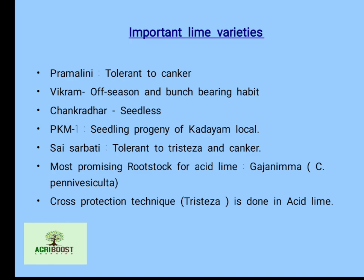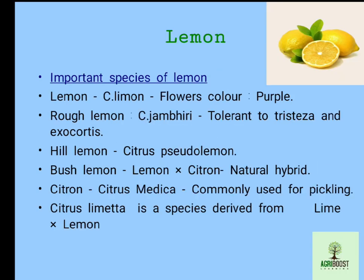The second important citrus group is lemon. In the lemon citrus group, the first important species is lemon, scientific name Citrus limon. The flowers of lemon are purple in color — usually all citrus fruits have white flowers, but in lime and lemon purple flowers are present. The second important species is rough lemon, scientific name Citrus jambhiri, which is tolerant to tristeza and exocortis disease.